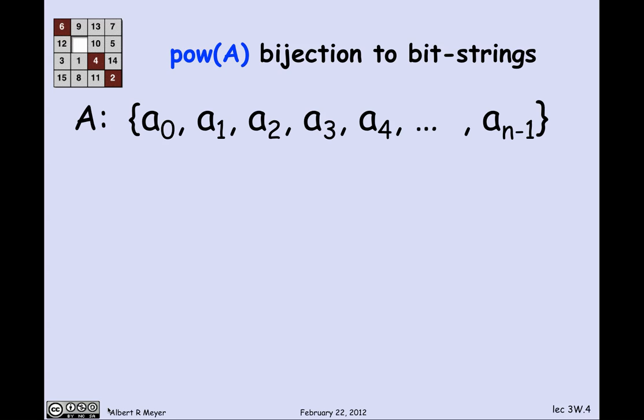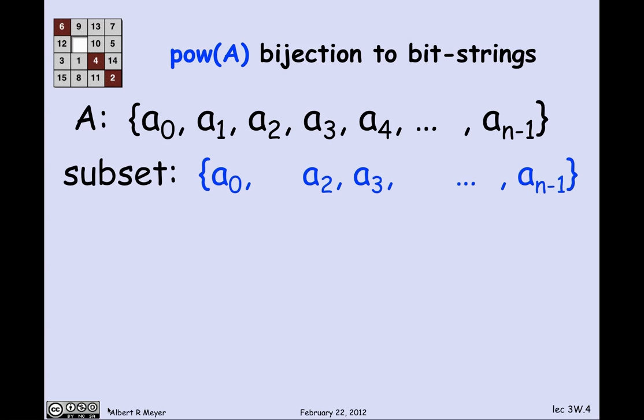Let's see what the counting argument looks like in general. Suppose A has n elements, numbered A0 through A(n−1), since computer scientists usually use zero-based indexing. Suppose we have some arbitrary subset of A — say it contains A0, not A1, contains A2 and A3, doesn't have A4, and so on, ending with A(n−1) in it.